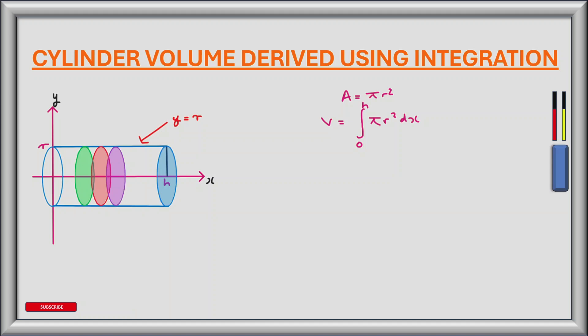If we now evaluate this integral, the volume of the cylinder is equal to π r squared x, obtained using the power rule of integration, and that is from 0 to h.